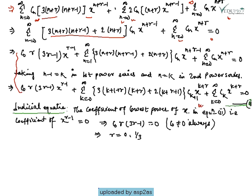To obtain the indicial equation, we set the coefficient of the lowest power of x equal to zero. Here the coefficient of the lowest power x^(r-1) equals zero, giving: c₀ · r · (3r - 1) = 0.